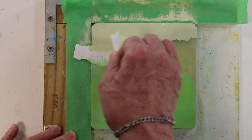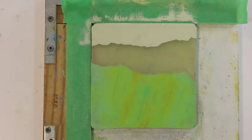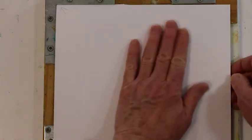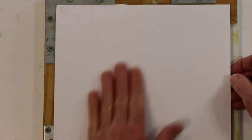The tape around the edges of the gel plate is only there to protect the wood from paint splatters, really. So I remove it before I pull the print.